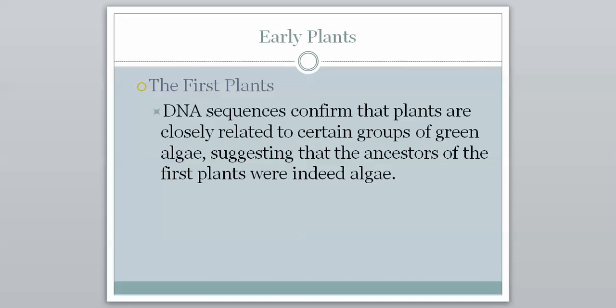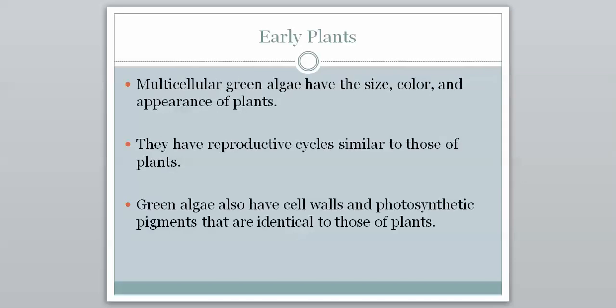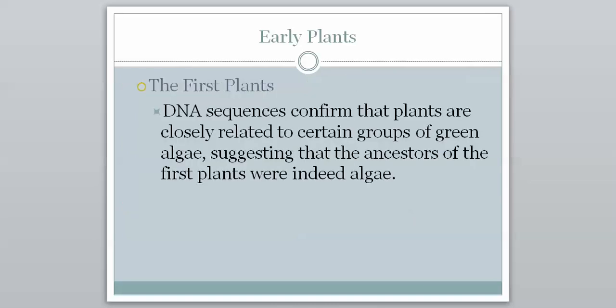We look at appearance — size, color, and appearance. Reproductive cycles were mentioned as part of how we identify things. And cell walls and photosynthetic pigments. Those are all characteristics we've looked at before when determining the evolutionary history of an organism. The same goes for plants as it does for animals.